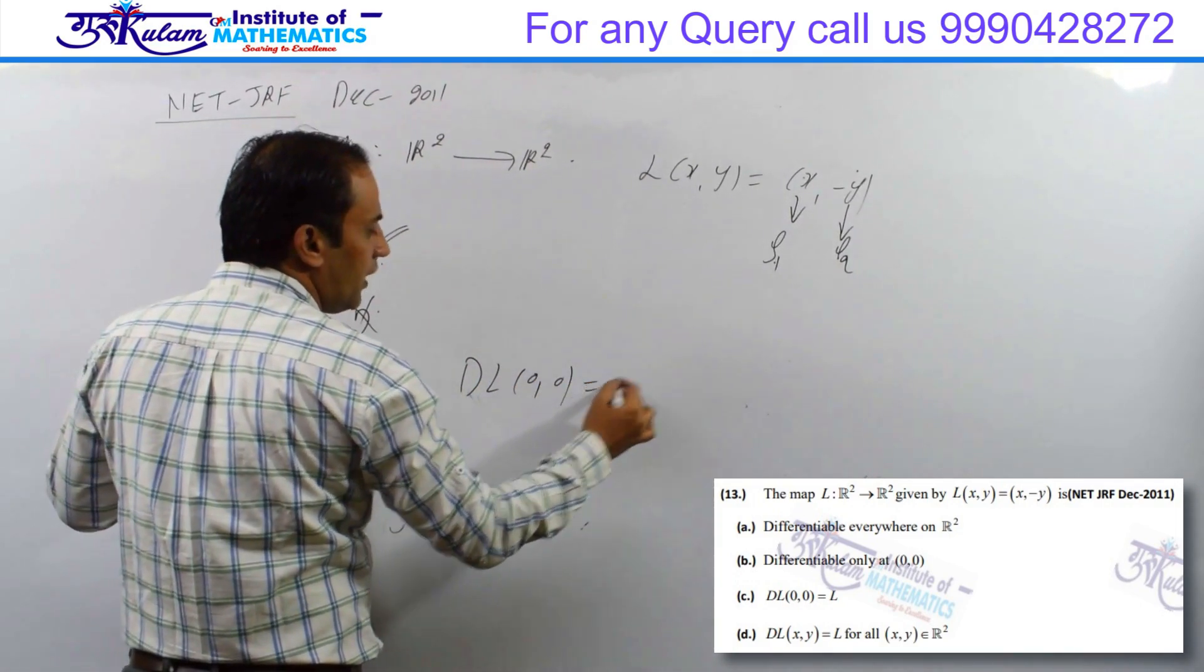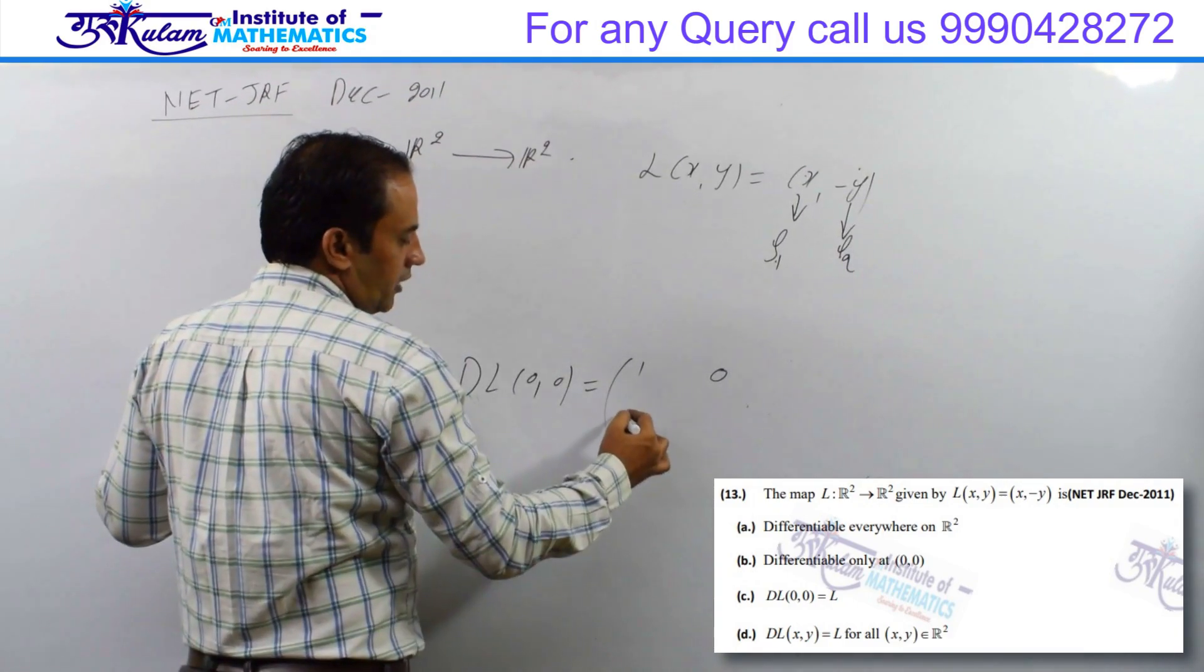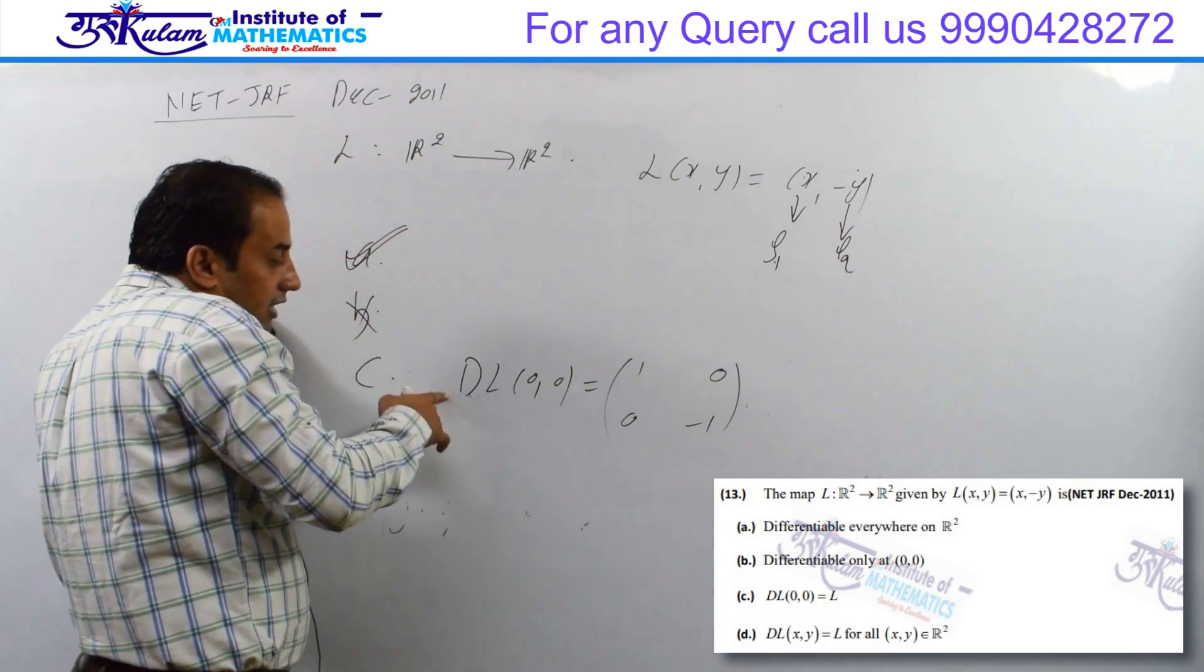Third option: D of L at 0,0 is the matrix 1,0 then 0, minus 1.